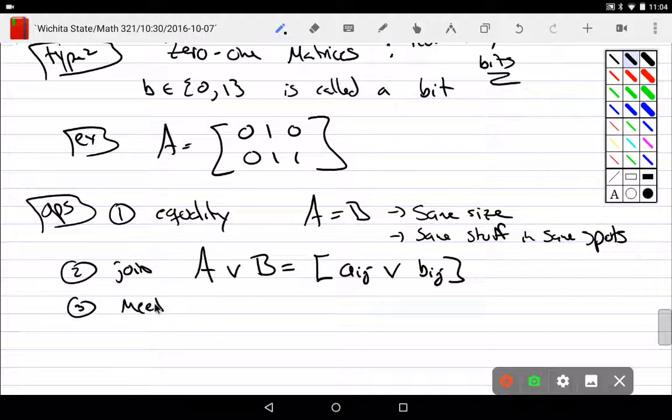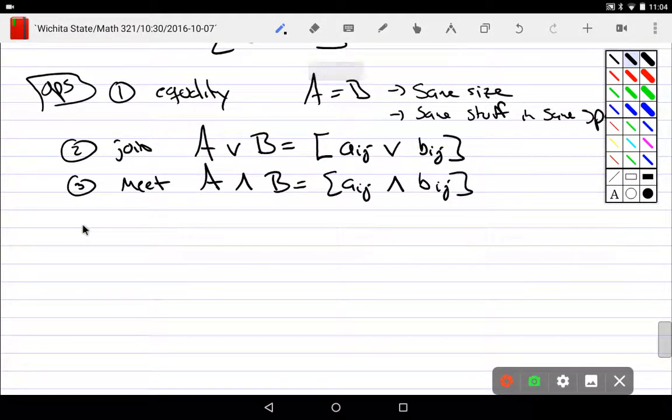Three, the meet. A meets B is AIJ bitwise AND BIJ. So we actually have two types here. We have two options. Before we only had a plus. Now we have two singleton operators because we have meets.